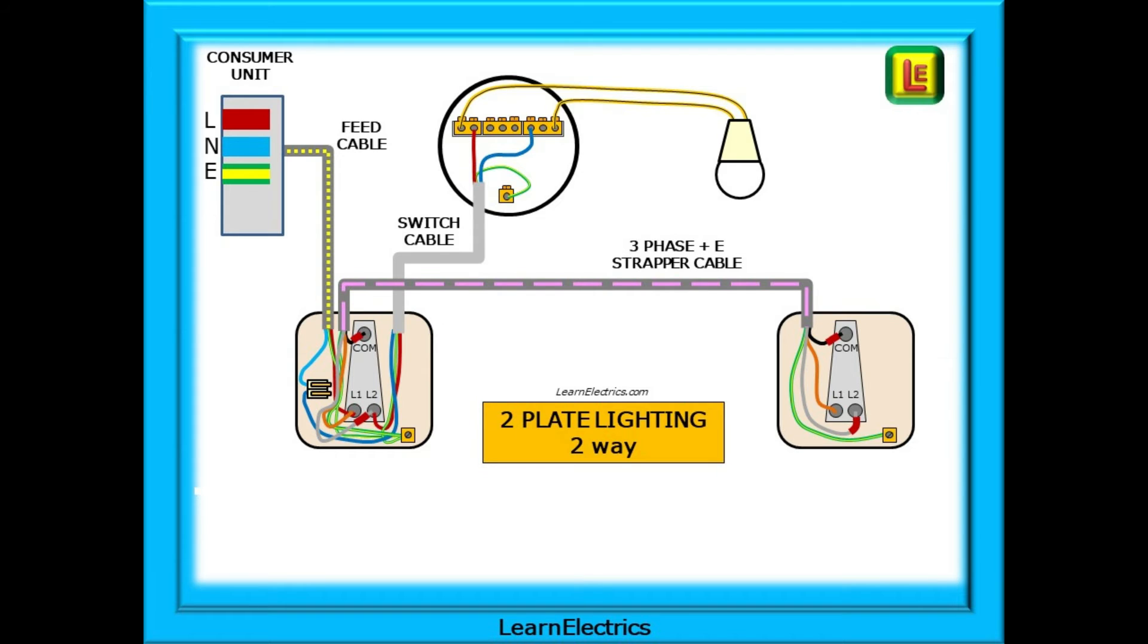And this slide shows all the conductor connections for the two-plate two-way lighting circuit and we have included the wiring to the lamp. This is how the completed circuit should look and don't forget that we have lots of videos with more information on the wiring of lighting circuits and how switches work that are available on our YouTube channel and on the website at learnelectrics.com.